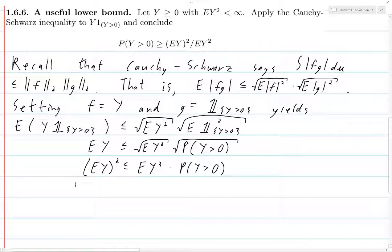And now we just move things around a little bit. So we get the measure of the set where Y is greater than 0, and then we have to reverse the inequality and we basically just move the expected value of Y squared into the denominator of the other side.